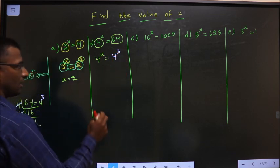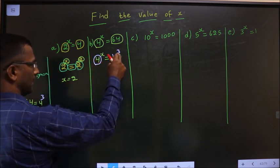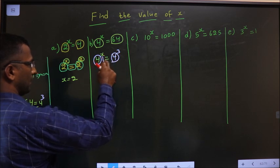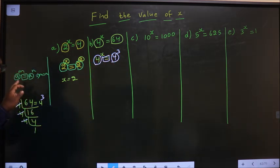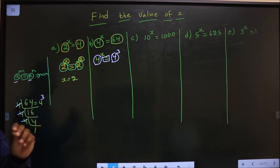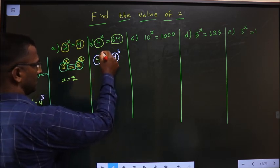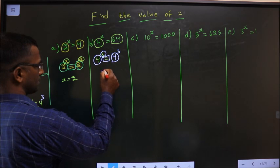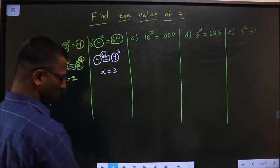Now the observation is again bases are same and equal to is present. So apply this rule: bases are same, equal to is present, so equate the powers. Here the power is x equal to 3.